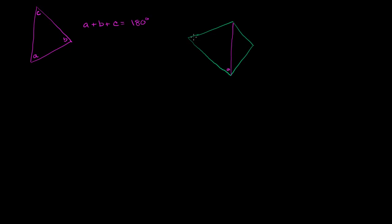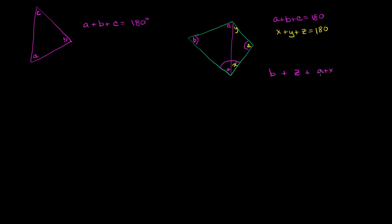And so if the measure of this angle is A, measure of this is B, measure of that is C, we know that A plus B plus C is equal to 180 degrees. And then if we call this over here X, this over here Y, and that Z, we know that X plus Y plus Z is equal to 180 degrees. So the sum of all of the interior angles is going to be B plus Z, plus A plus X, plus C plus Y. We already know A plus B plus C is 180 degrees, and Z plus X plus Y is equal to 180 degrees. So that's 180 plus 180, which is equal to 360 degrees.